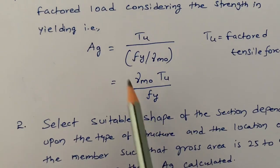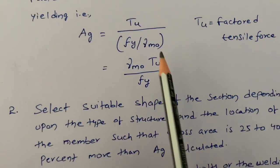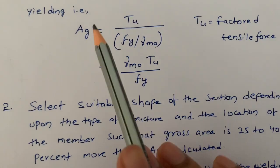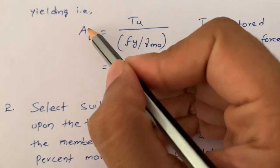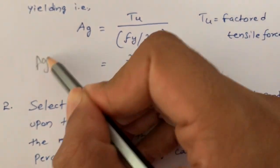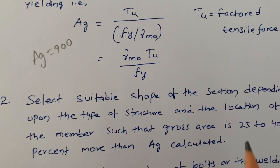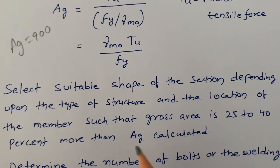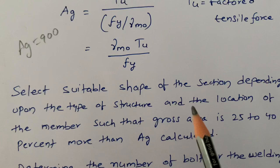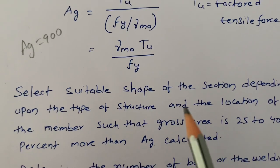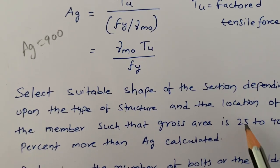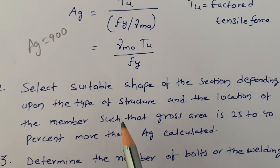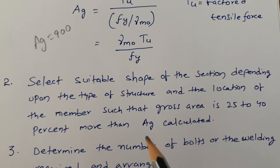After calculating the A_z value, we need to provide 25 to 40 percent more than the calculated A_z. For example, if A_z calculated is 900, we need to add 25 to 40 percent more to that value. After adding this margin, we need to select the section — whether it is an angle section or any other type of section.